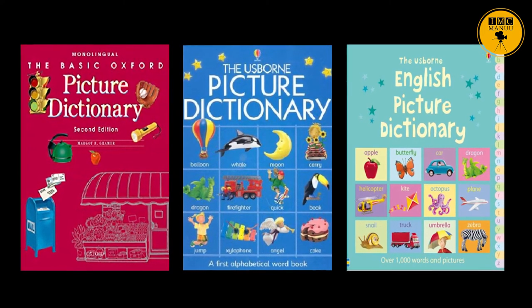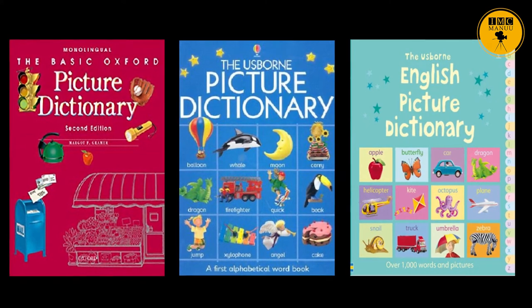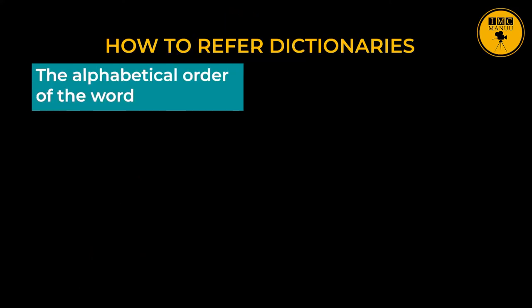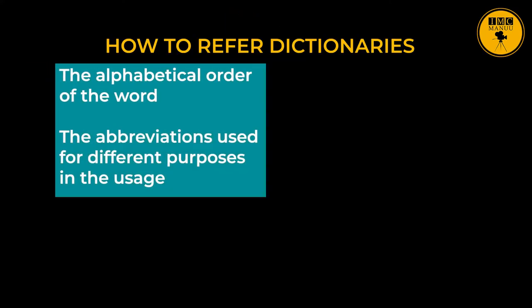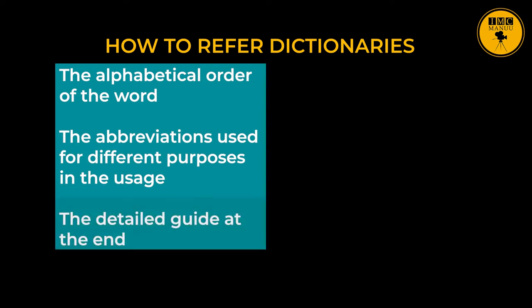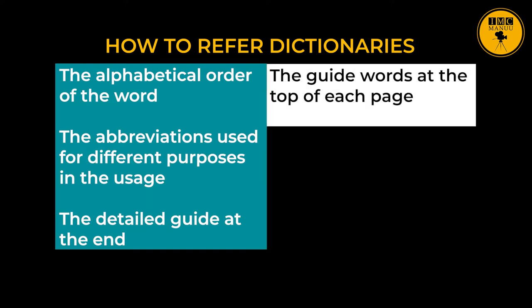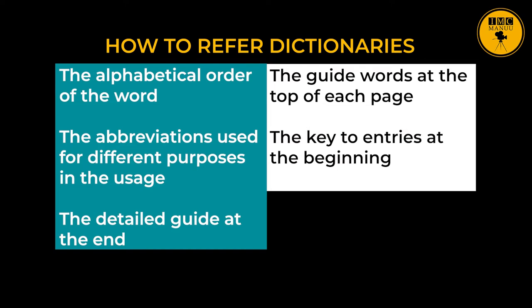In a picture dictionary, pictures are given along with words and their meanings for clear understanding of the readers. Teachers should help students learn how to use all such types of dictionaries. Generally, dictionaries are referred using these techniques: the alphabetical order of the word, abbreviations used for different purposes, the detailed guide at the end, guide words at the top of each page, the key to entries at the beginning, and the appendices. For using digital dictionaries, one has to type the word in the search box. Thus, dictionary is an important reference material that helps an individual get command over a language or a subject.